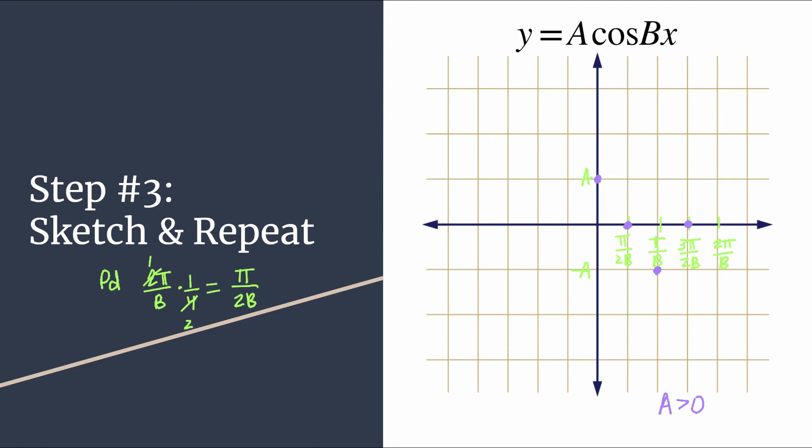And before we sketch, I usually like to go ahead and place my first point of the next cycle. And all you have to do is repeat. So I like to just for drawing purposes, have that next point, that next maximum at two pi over B. So simply sketch in. And that is one cycle of a general cosine equation.